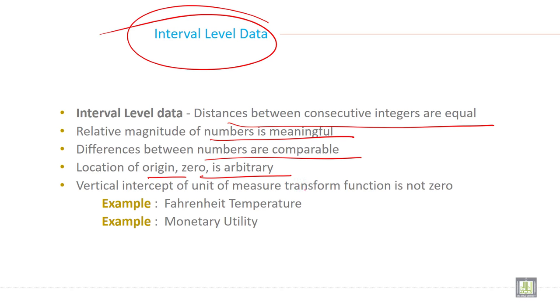Vertical intercept of unit of measure transform function is not zero. For example, high temperature or monetary utility.